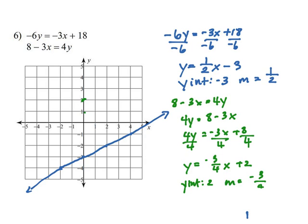And then we have 1, 2, 3, down 1, 2, 3, 4. Okay, because that negative can go in the numerator or in the denominator. Just remember that.